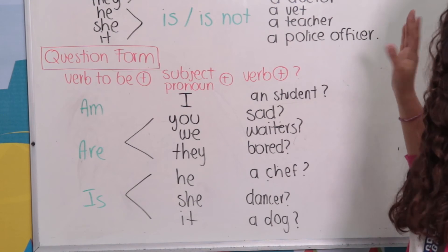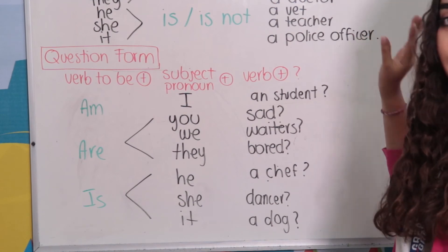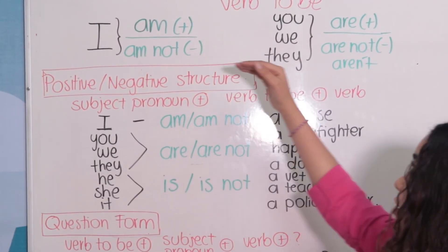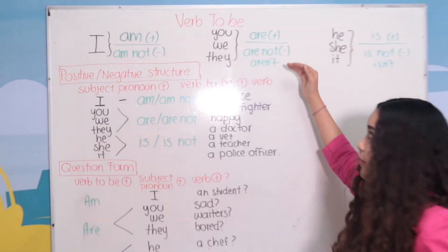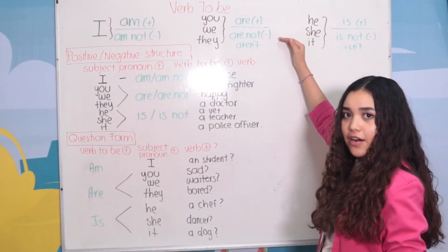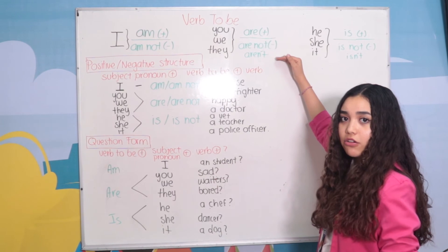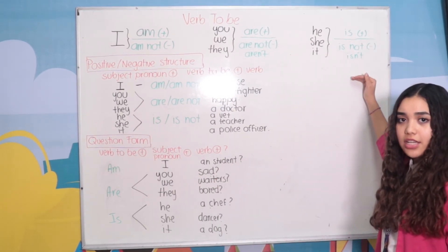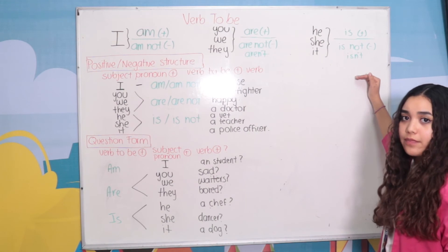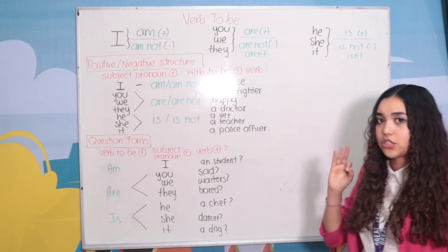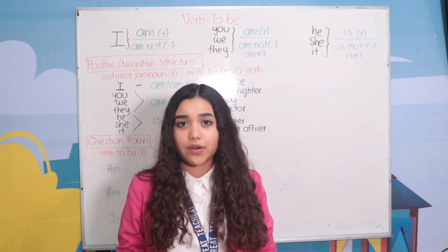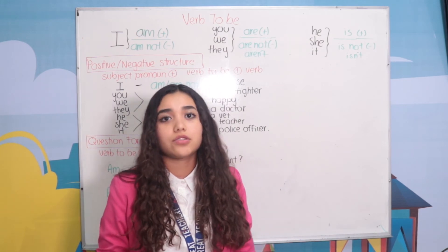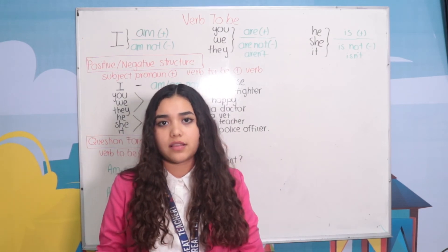Okay, let's remember. We have verb to be. For I, we use 'am' and 'I'm not'. For you, we, and they, we use 'are' and 'are not' or 'aren't' in the contraction. He, she, and it: 'is' in positive, 'is not' in negative, or 'isn't' in the short form. And we have three structures. To describe people, we use the verb to be to talk about the clothes or anything that they do.